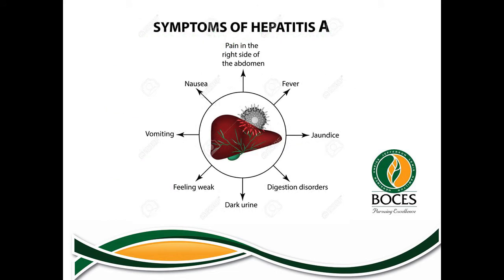Symptoms of hepatitis A include pain in the right side of the abdomen, discoloration or jaundice, nausea, vomiting, weakness, and sometimes flu-like symptoms.